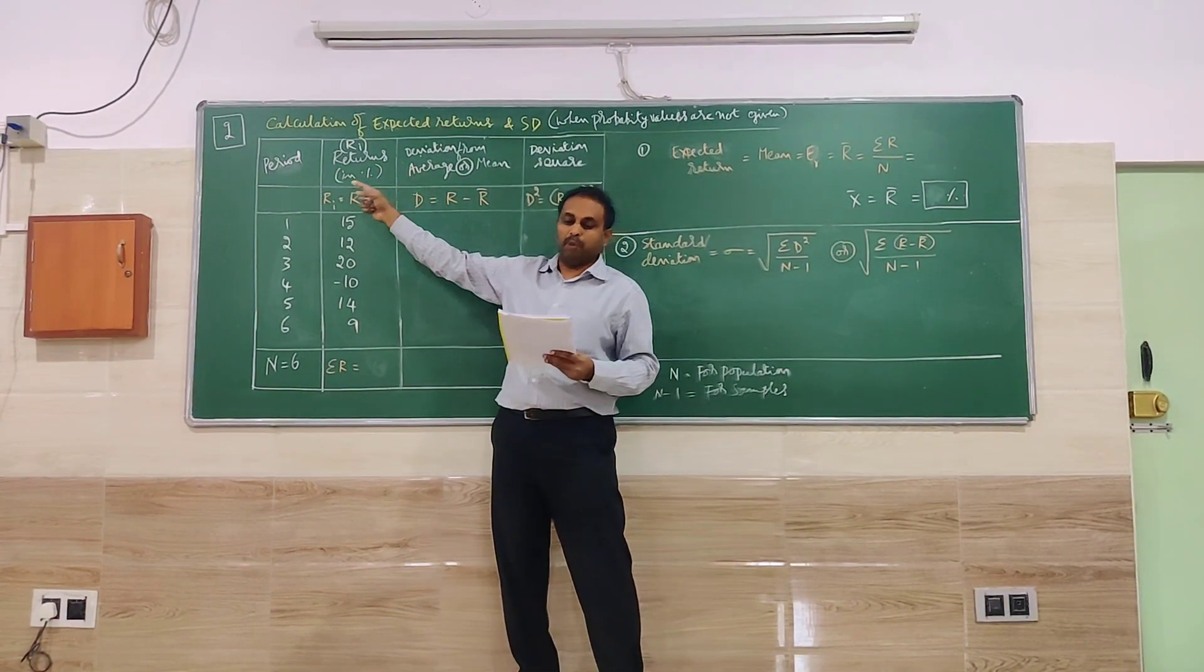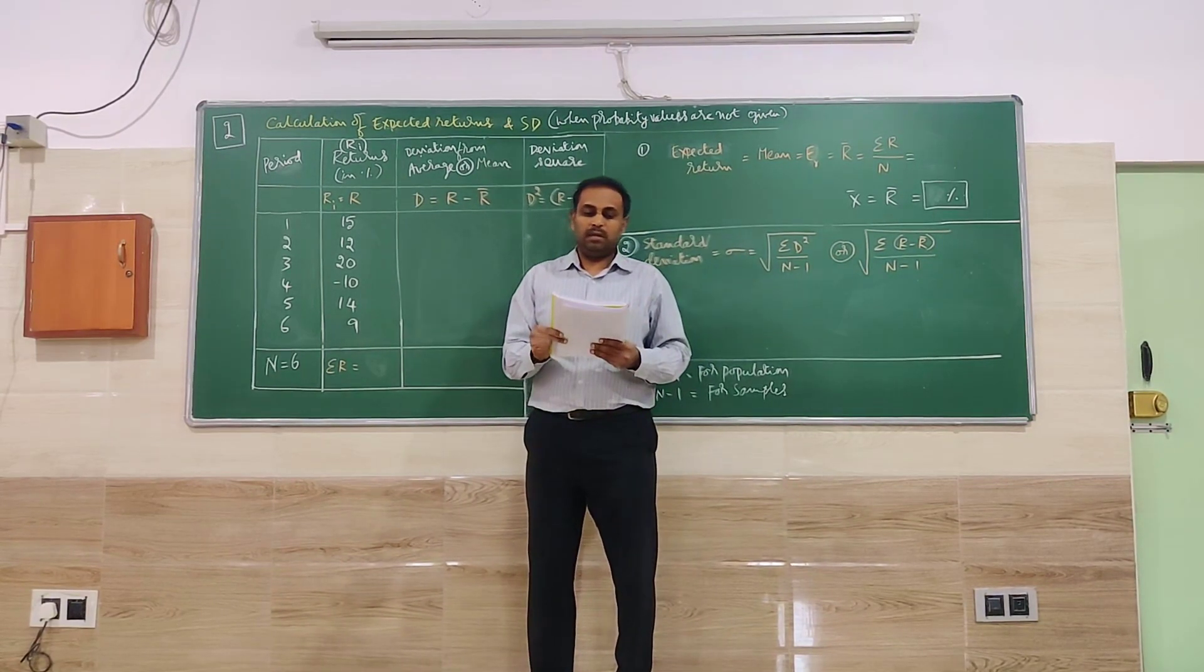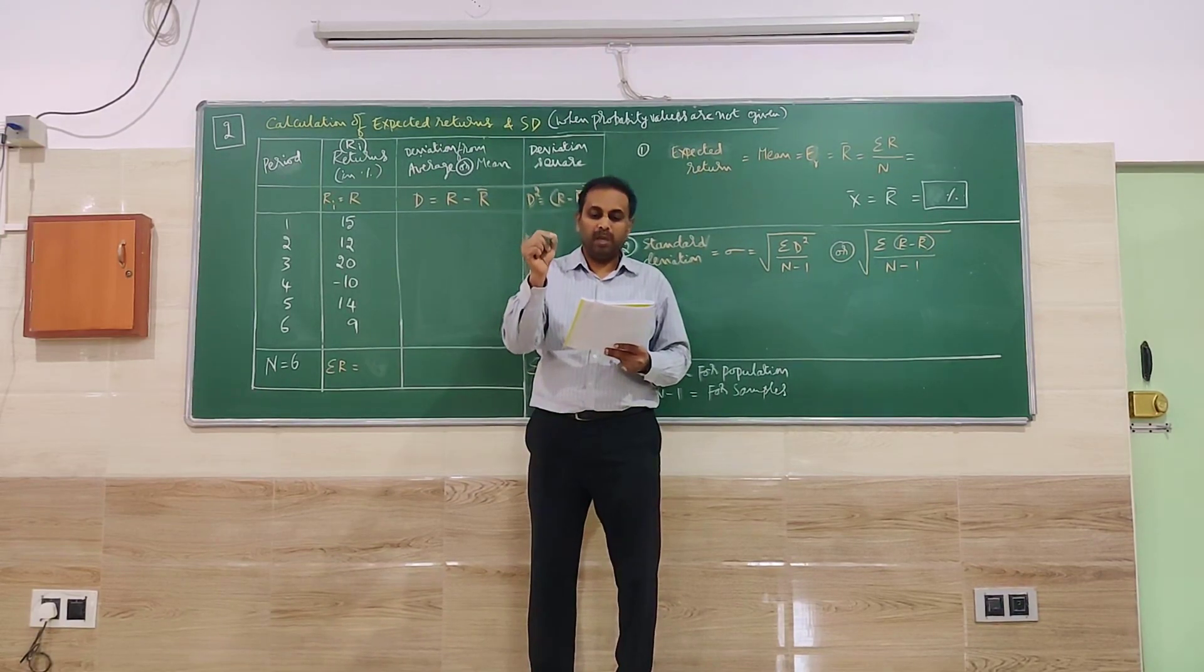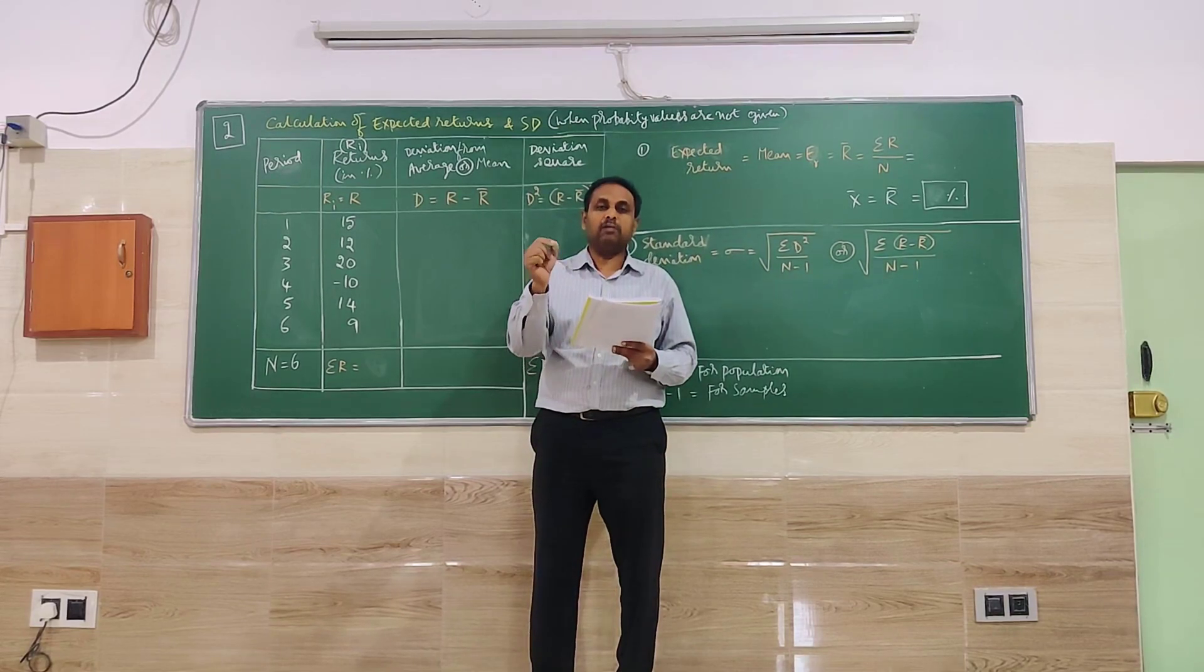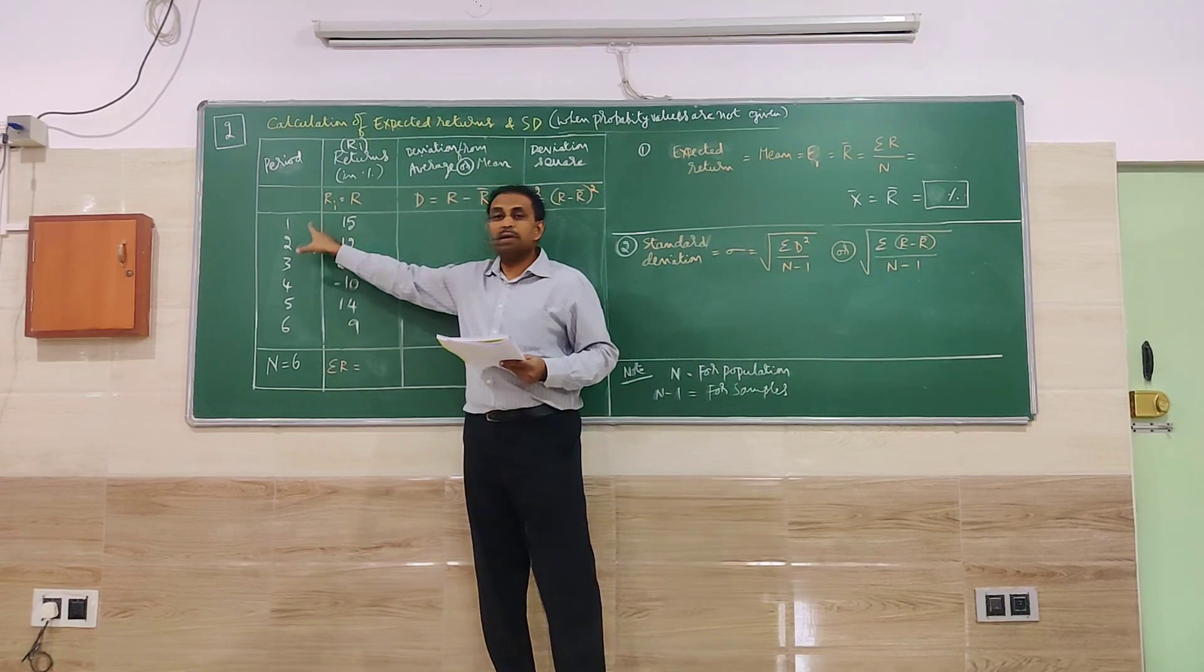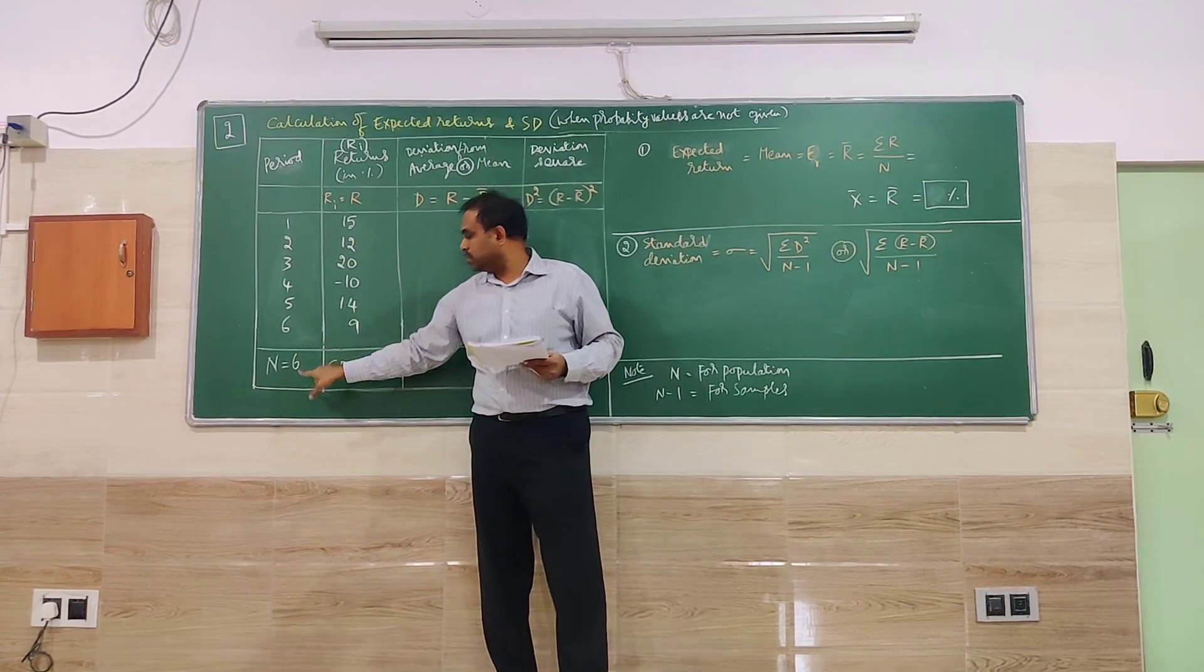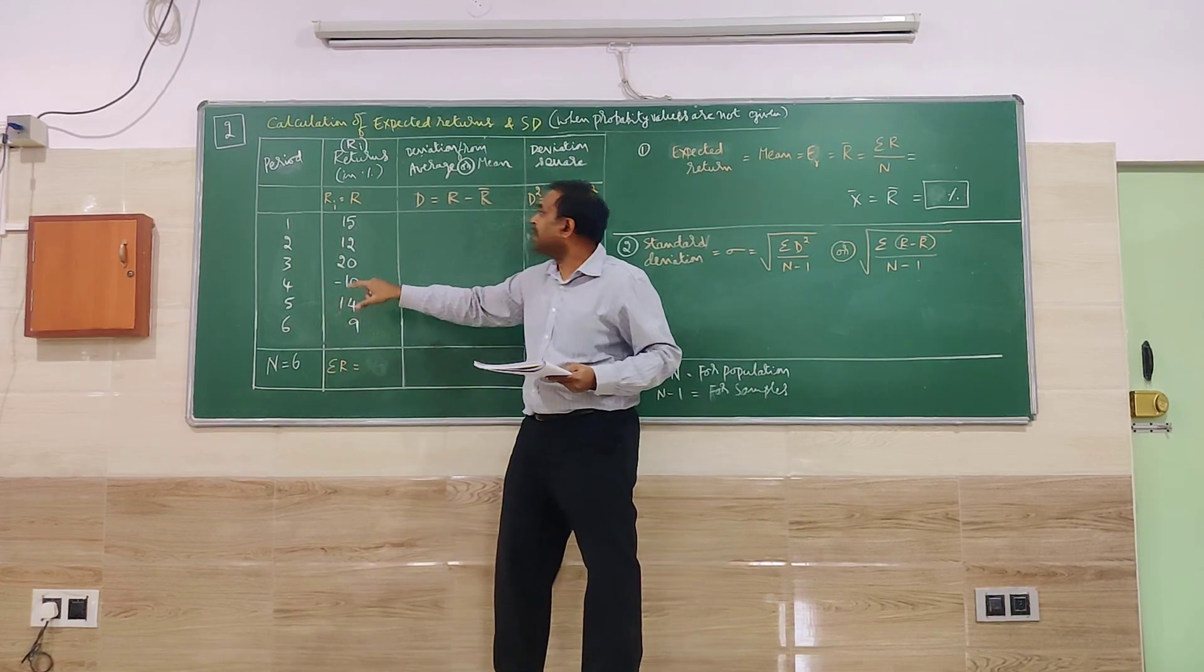In this problem, consider the returns from a stock over a period of 6 years. Calculate expected returns and standard deviation. So the problem I have written here: period 1, 2, 3, 4, up to 6 years. So total number of years or total number of items are 6.